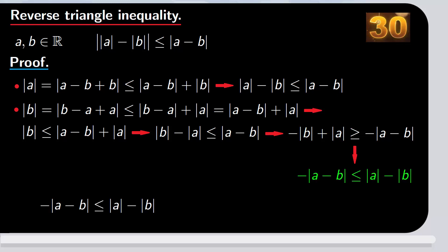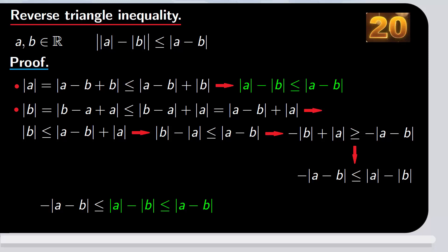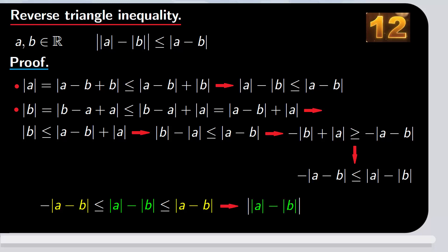So we have minus the absolute value of a minus b is less than or equal to the absolute value of a minus the absolute value of b, and this is less than or equal to the absolute value of a minus b. That is, we have a number between minus a positive number and that same positive number, so the absolute value of that number is less than or equal to the positive number, and we have the desired inequality.